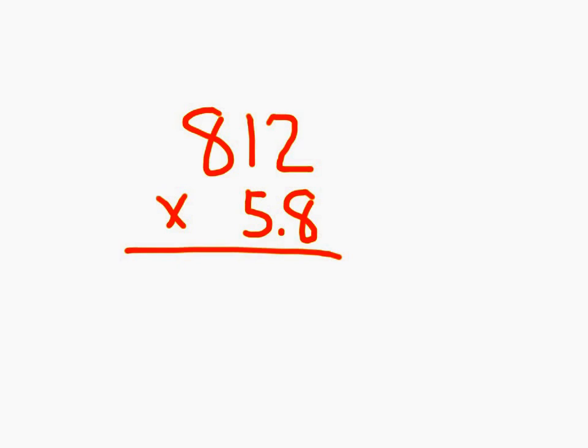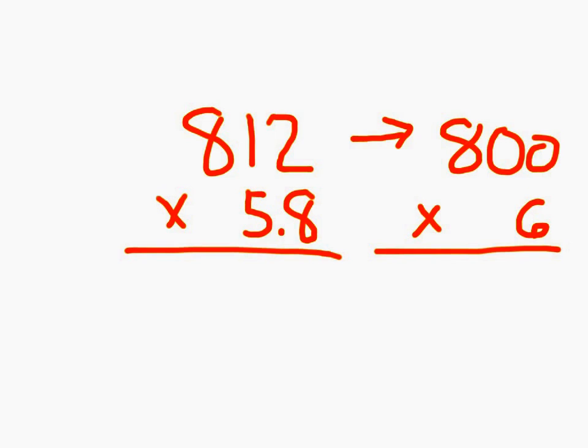For 812 times 5 and 8 tenths, still, the greatest place in that first number is now the hundreds place. So, 812 rounds to 800. And then we just multiply by 6, because this is 5 and 8 tenths there. And so, 800 times 6 is 4,800.